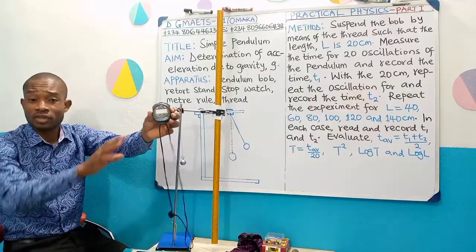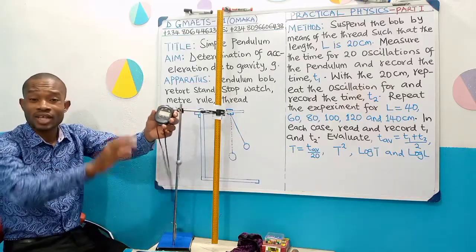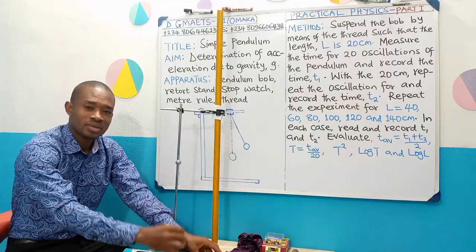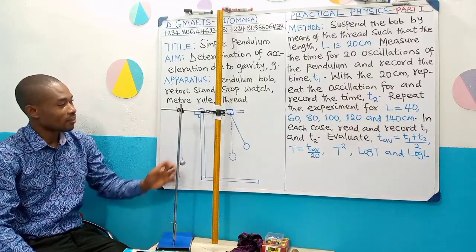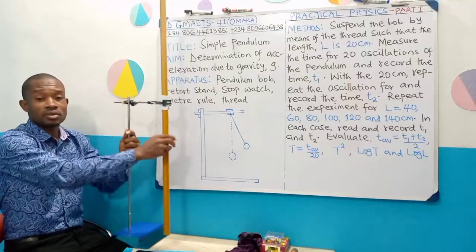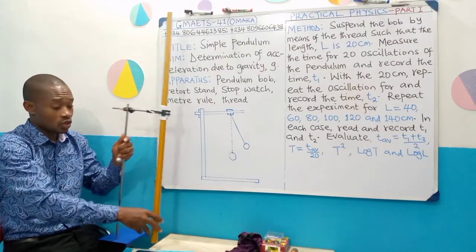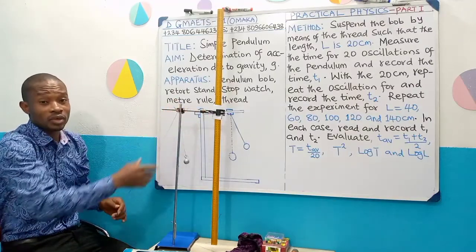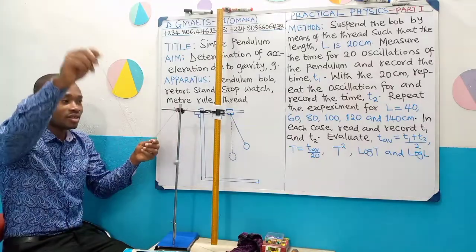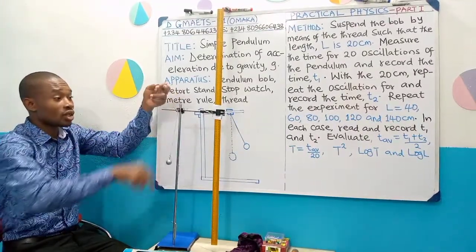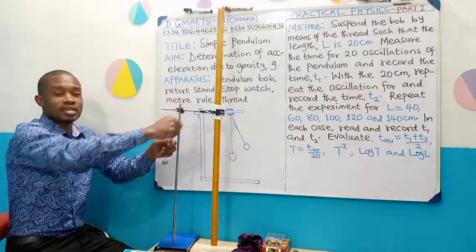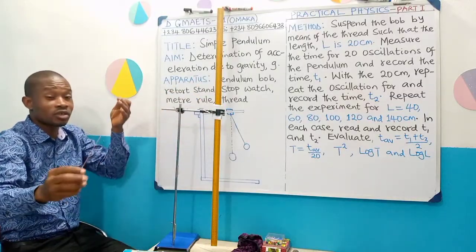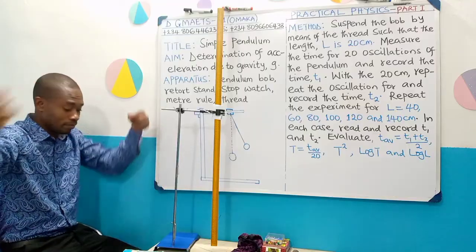There are different forms of stopwatch. You can also use the stopwatch of your phone, you will get the same results. We need a meter rule. The purpose of the meter rule is for us to use it and measure different lengths of the pendulum following the instruction. Then of course our thread. I had to make the thread so long, actually more than 140 cm. The reason is because in the instruction I am going to use a pendulum length of 140 during the experiment.